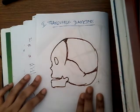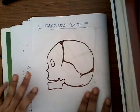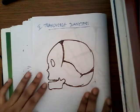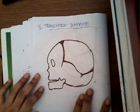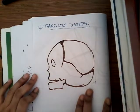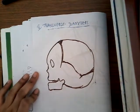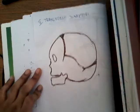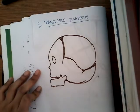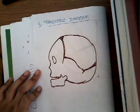In the transverse diameters of the fetal skull, there are mainly four diameters. The first two are more important and the next two are less important. I would like to start from the less important ones so that it becomes easier to write.